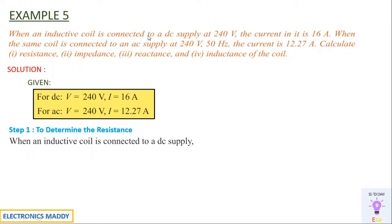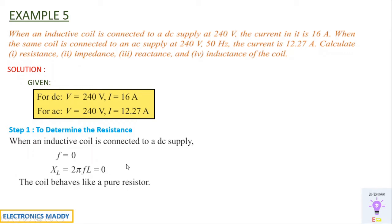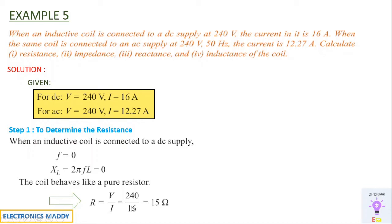Step one: find resistance. When connected to DC supply, frequency = 0, so X_L = 2πfL = 0. The coil behaves like a pure resistor, so R = V/I = 240/16 = 15 ohms. In general, an inductance coil connected to a DC supply acts as a short circuit for inductance, and you can directly find R = V/I.